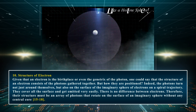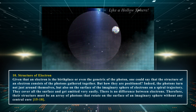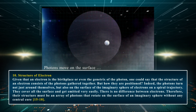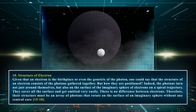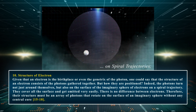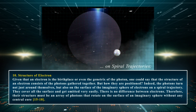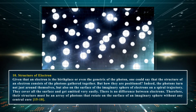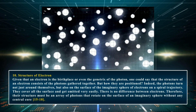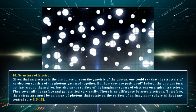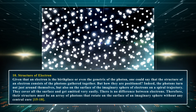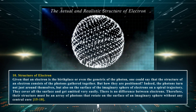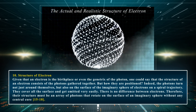Structure of electron. Given that an electron is the birthplace, or even the genetics, of the photon, one could say that the structure of an electron consists of photons gathered together. The photons turn not just around themselves, but also on the surface of the imaginary sphere of electrons on a spiral trajectory. They cover all the surface and get emitted very easily. There is no difference between electrons. Therefore, their structure must be an array of photons that rotate on the surface of an imaginary sphere without any central core.